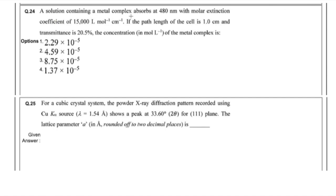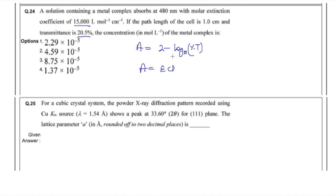The next question was from Beer-Lambert's law. A metal complex solution absorbs at a given wavelength with a given molar extinction coefficient, path length of 1 cm, and a given percentage transmittance. First calculate absorbance using A = 2 − log₁₀(%T), then use A = εcl to calculate concentration c. The answer comes out to 4.59 × 10⁻⁵, so the answer is option number two.